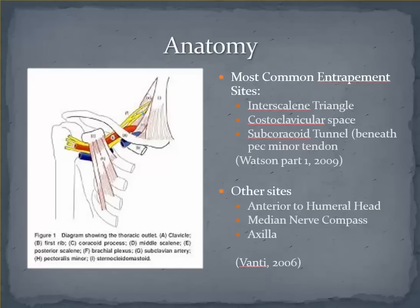The other most common entrapment site is underneath the pec minor tendon and muscle, referred to sometimes as the subcoracoid tunnel. There are a few lesser known entrapment sites reported in the literature. The neurovascular structures can also be compressed in regions anterior to the humeral head, in the median nerve compass — a Y-shaped passage formed between the median nerve roots and containing the axillary artery — as well as in the regions of the axilla.